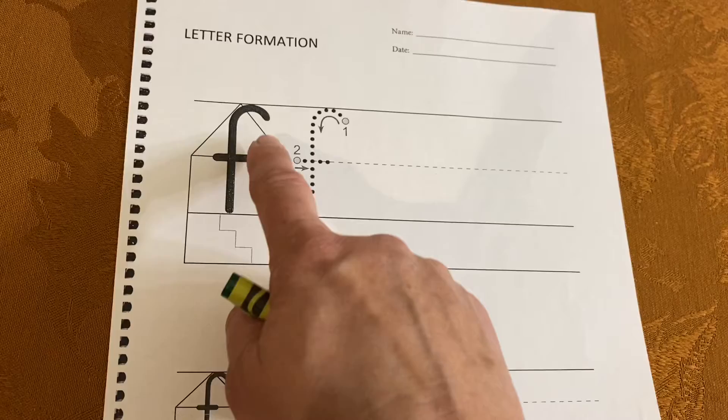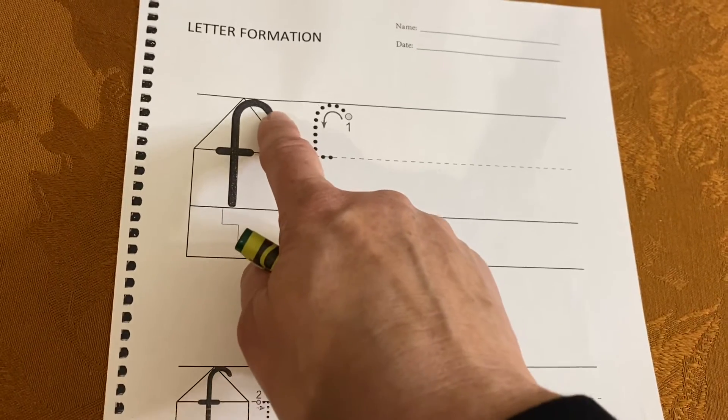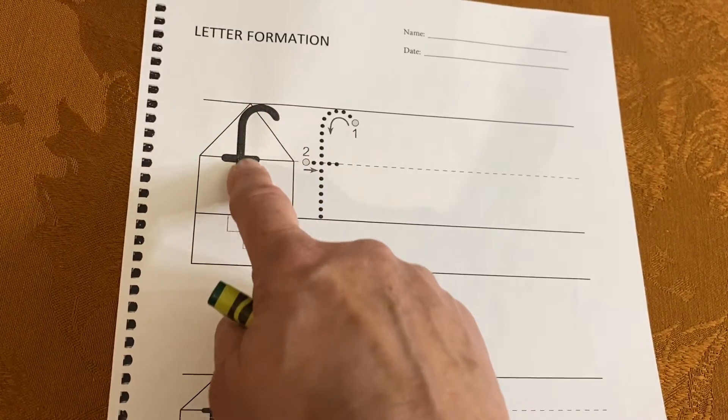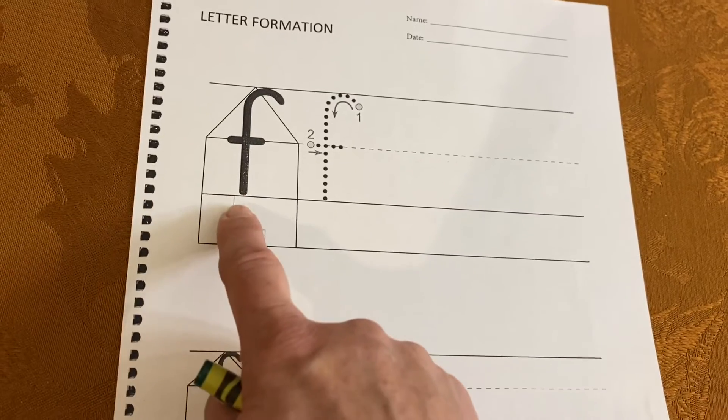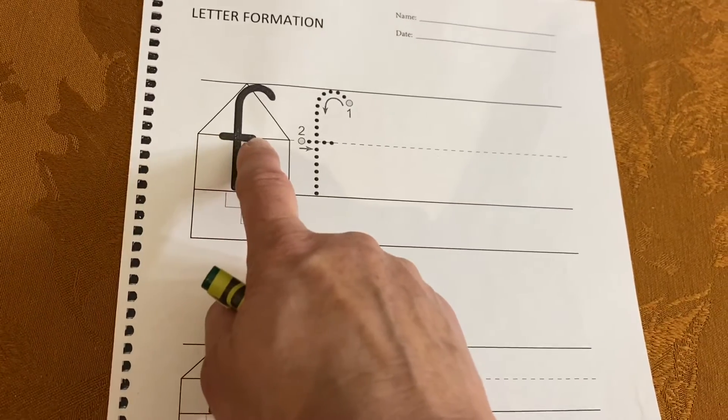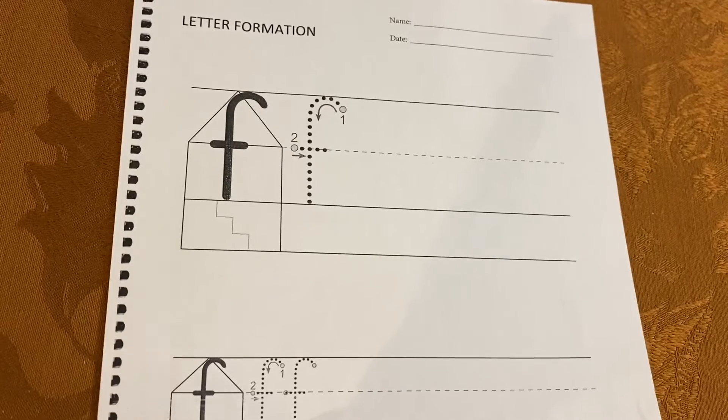It starts at about that two o'clock dot and then you curve around touching the top and come to the bottom. Does not go in the basement and then you're going to do a line across at the middle line.